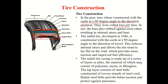The 90 degree angle reduces internal stress and allows the tire tread to lay flat on the road, which provides more traction and improved fuel efficiency. The radial tire casing is made up of a series of layers or plies; the material may consist of polyester, rayon, or fiberglass. Over these we have a steel belt constructed of woven strands of steel cord. The radial steel belt provides better traction and protects against punctures.